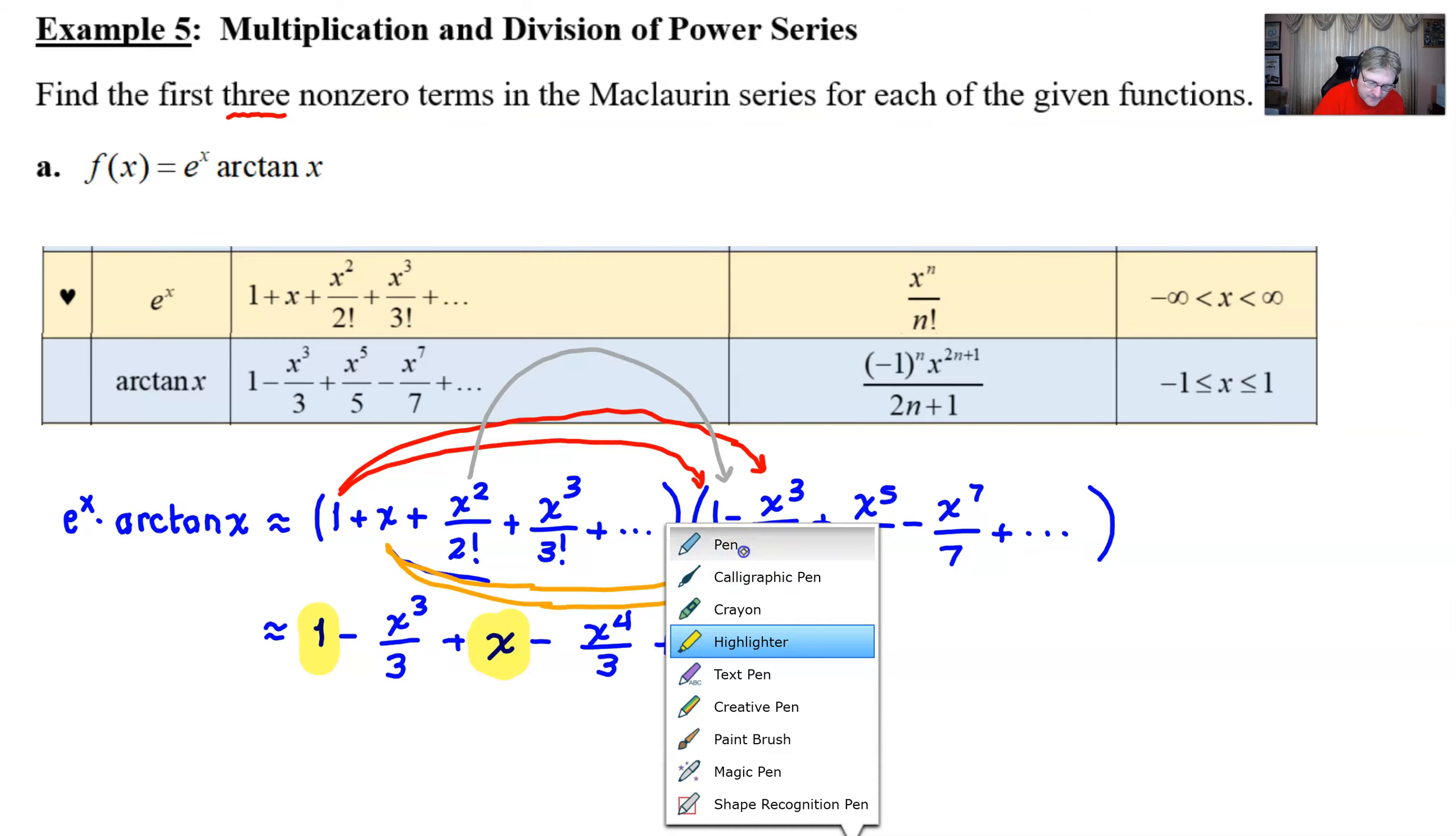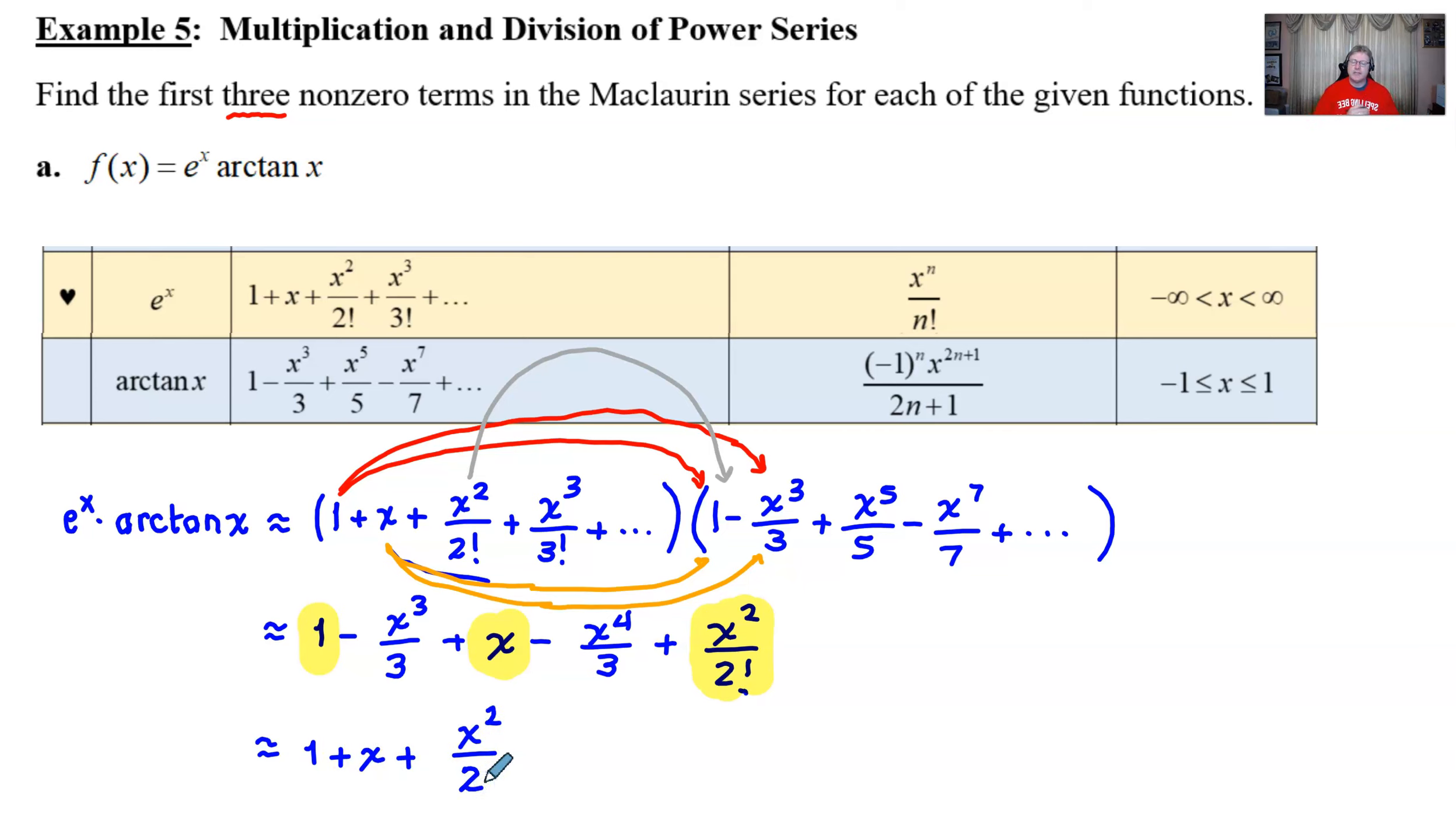So your final answer for this would just simply be this is approximately one plus x plus either x squared over two factorial, or you could say x squared over just two. And that would be your first three non-zero terms.